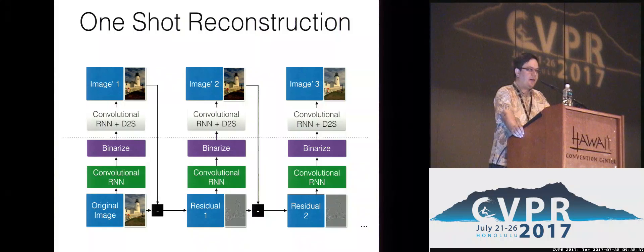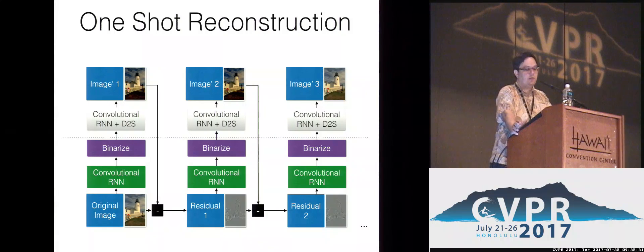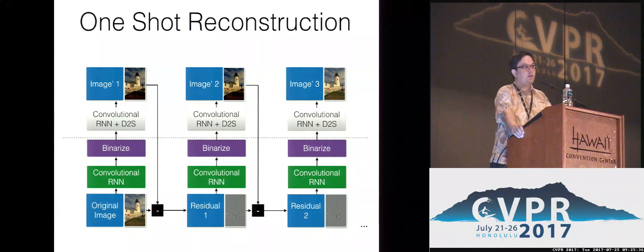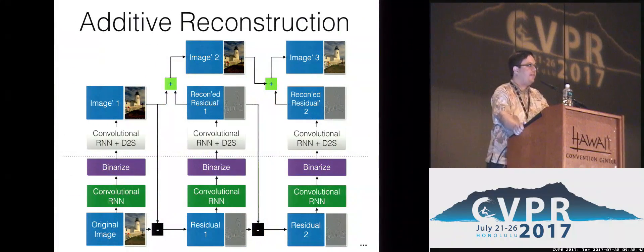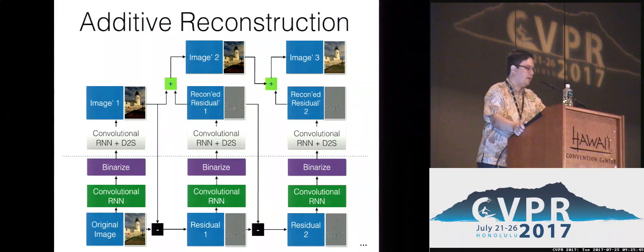Every time, we decode the full-resolution image. So the topmost part of this network has to be able to encode in its state the full-resolution image.